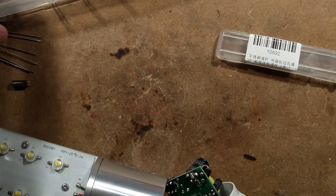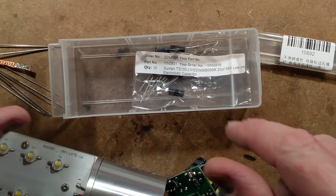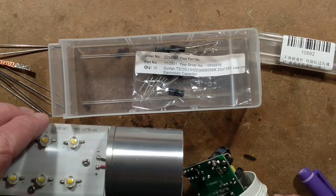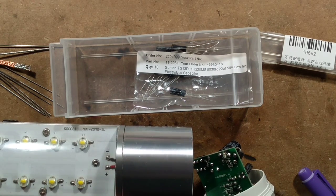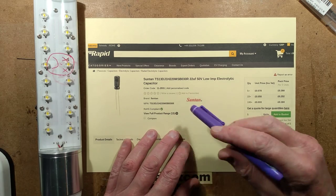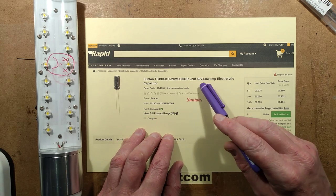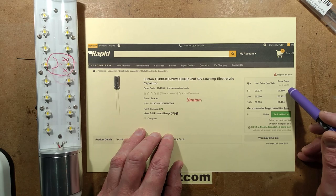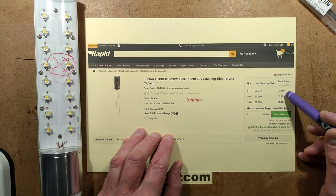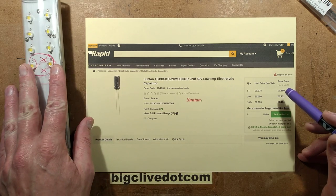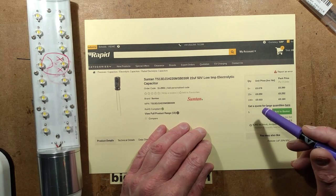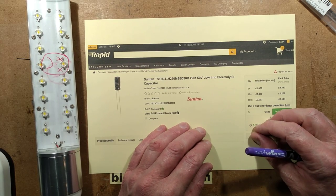And that would be annoying, because that capacitor came from Rapid Electronics, and it cost a total of 40p for five of them. So you could fix five of these lights for 40p. That's kind of a shame, really, isn't it?